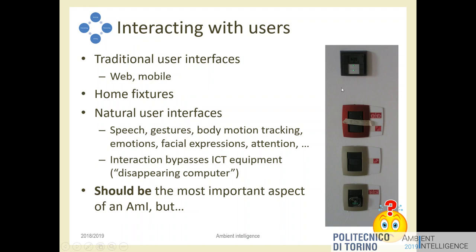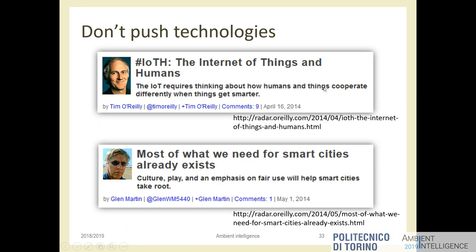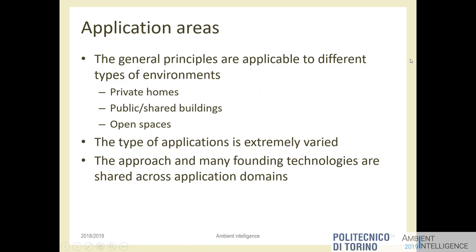One final point about user interfaces: when possible, try to reuse existing interfaces. For example, in a car we already have door switches, displays, levers; in streets we have traffic lights. If you can give a new function to an existing interface, it's better because the user doesn't have to learn anything new — adding a new interface can be confusing. So for today, I'll stop here.